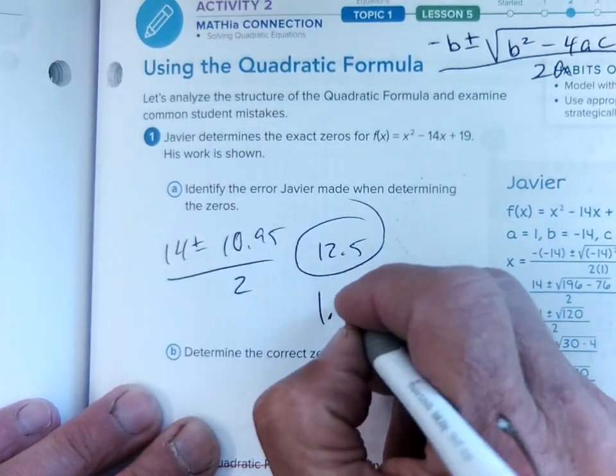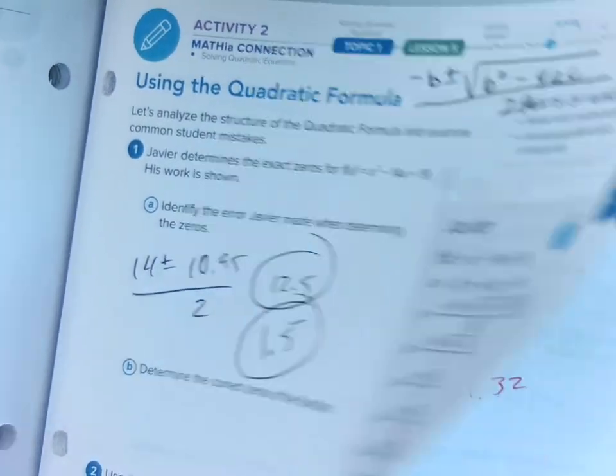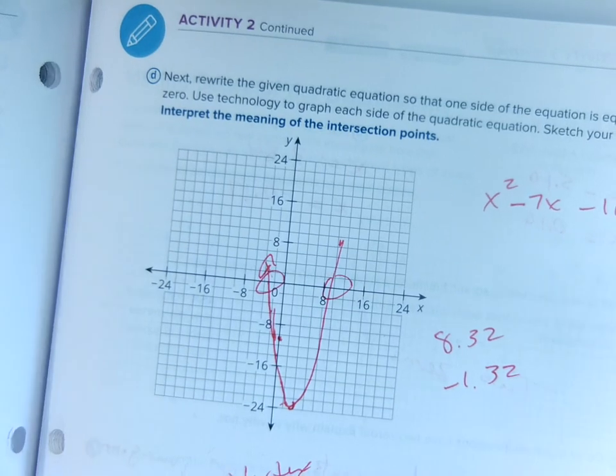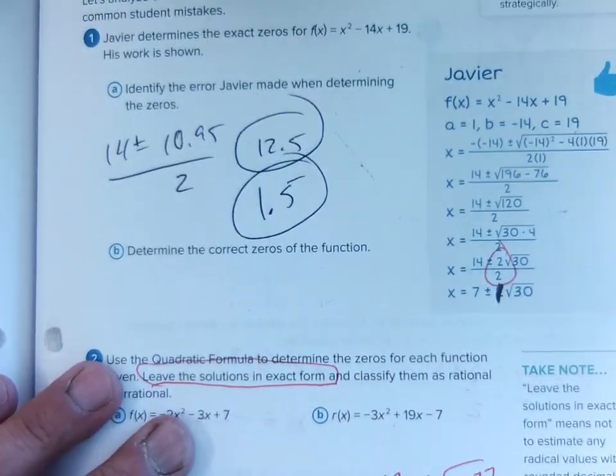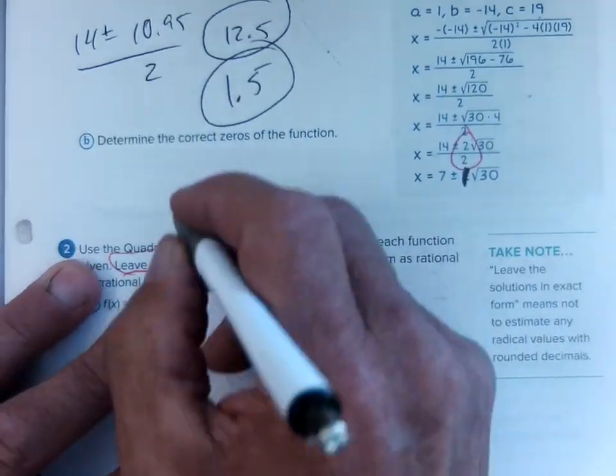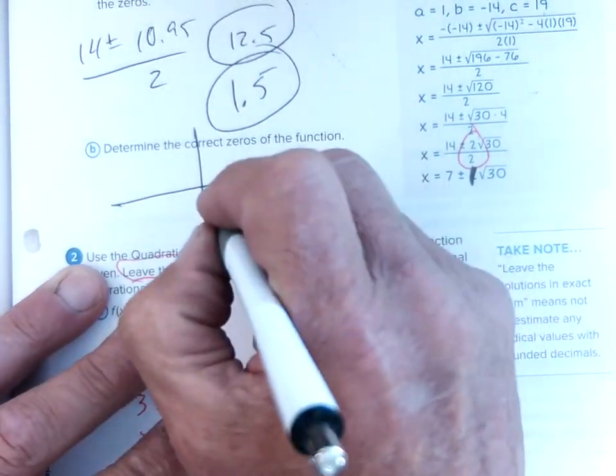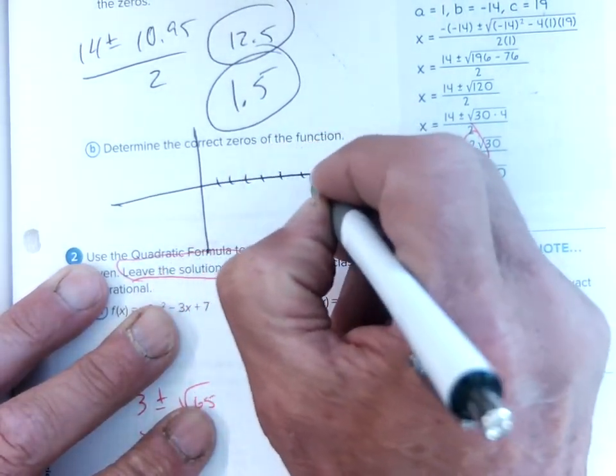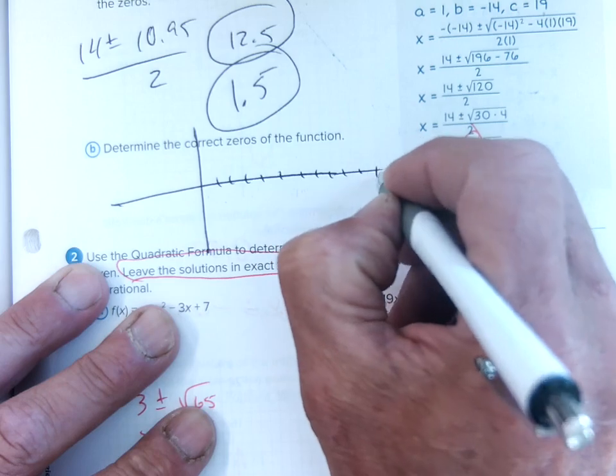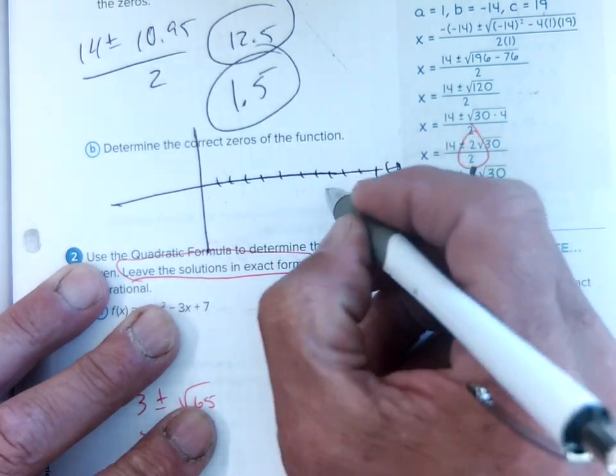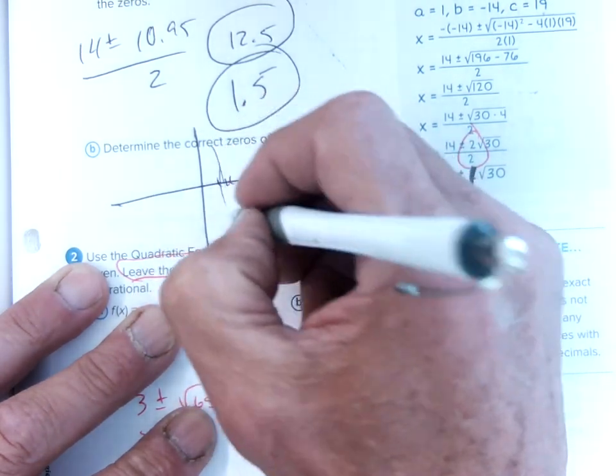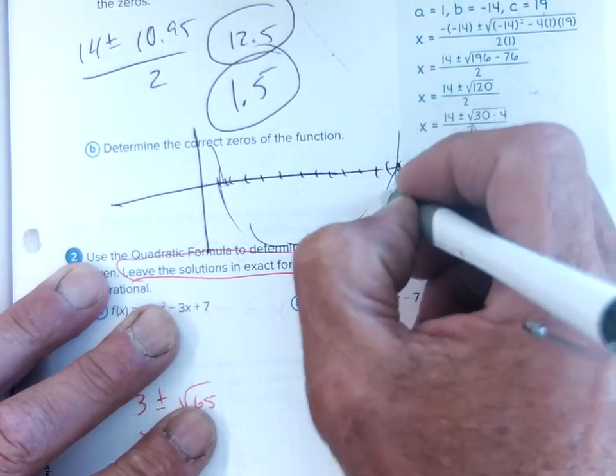So those are the zeros, and so if we graph this, and I think we do that on the next page. If we graphed it, we know our zeros are going to be at 1, 2, 3, 4, 5, 6, 7, 8, 9, 10, 11, 12, and then 1.5, it'll probably be something like that.